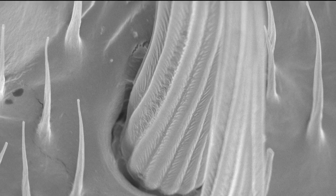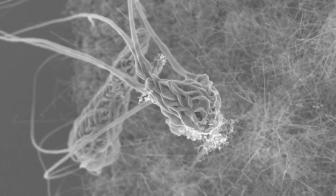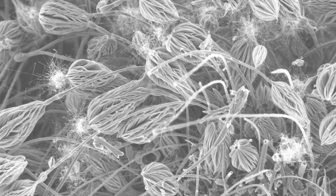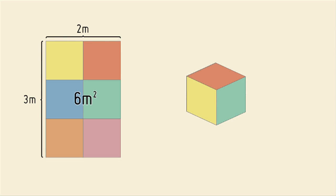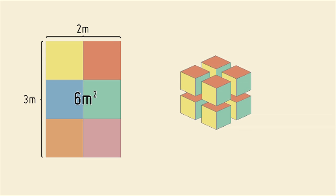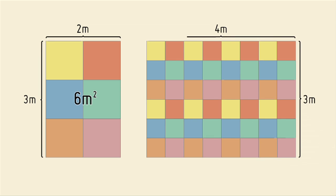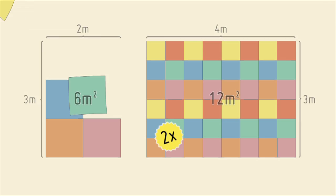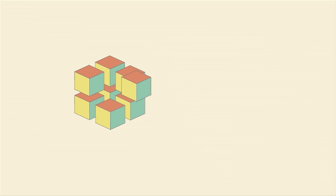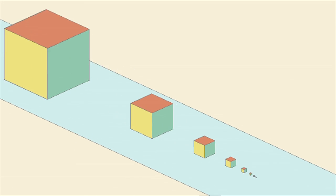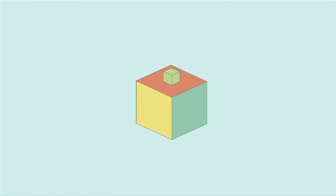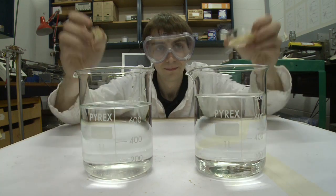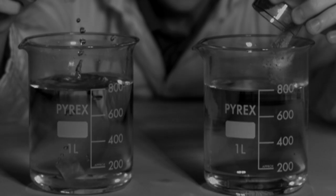The nanoworld isn't just unusual looking — things behave differently there too. One reason for this is surface area. If you take a cube and lay the surface flat, you can see how much of that cube can react with the outside world. If you divide the same cube into 8 little cubes, the surface area is twice as big. If you keep making smaller cubes, the surface area becomes immense. More surface means more area for reactions. This is why powdered sugar dissolves faster than sugar cubes.